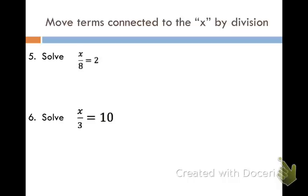Next we have numbers that are attached to the x by division. Remember, if you have a fraction here, it's the same thing as division. If you look back at your notes, the inverse of division is multiplication. So I'm going to multiply both sides by eight. On the left side, both of my eights cancel out and I'm just left with x. On the right side, I have sixteen.